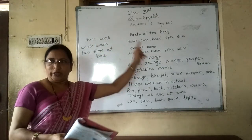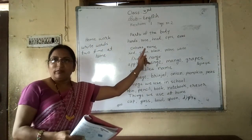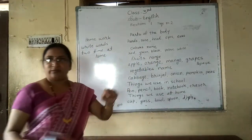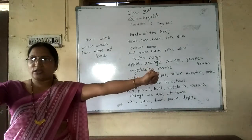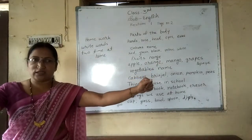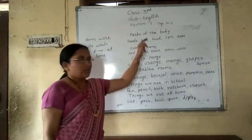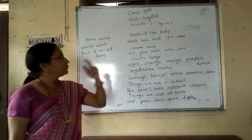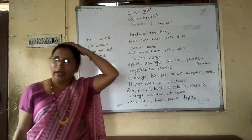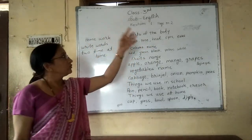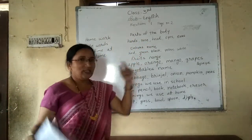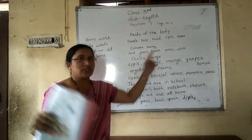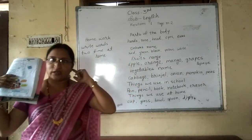Parts of body. Hands — two hands. Nose — one nose. Head — one head. Eyes — two eyes. Ears — two ears.